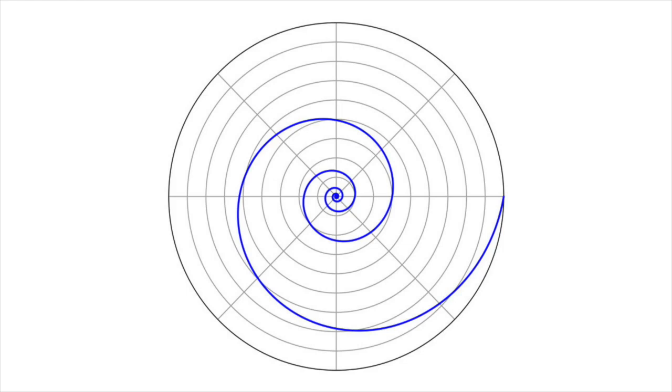In polar coordinates r-theta, the equation of the logarithmic spiral is r equals a times b to the theta, with positive real numbers a and b. Changing a rotates the spiral, while b controls how tightly and in which direction it is wrapped.